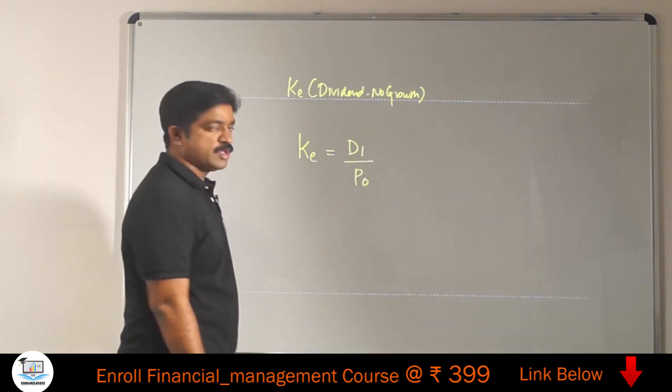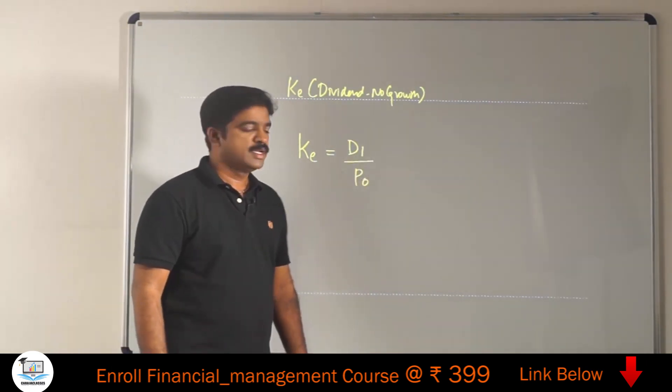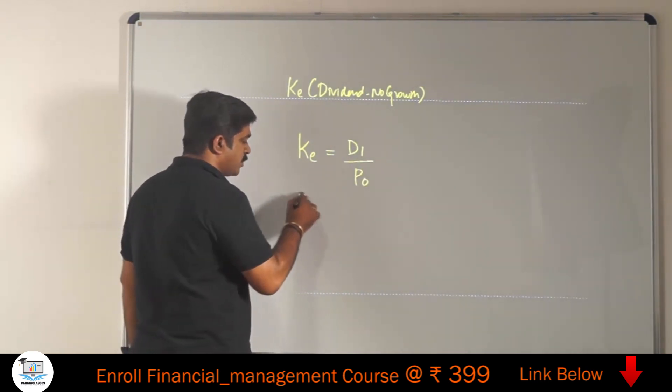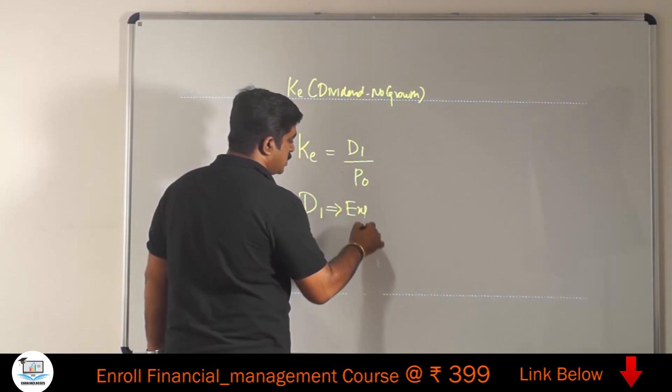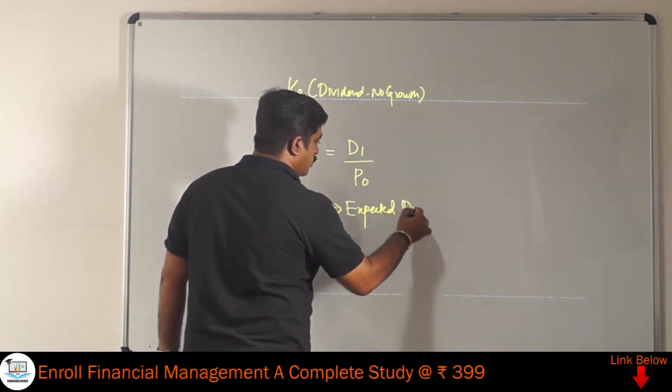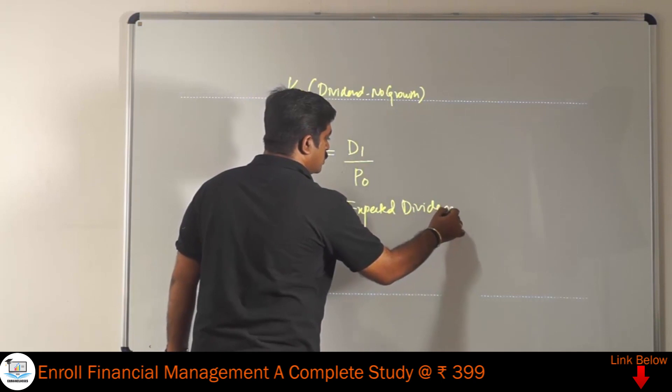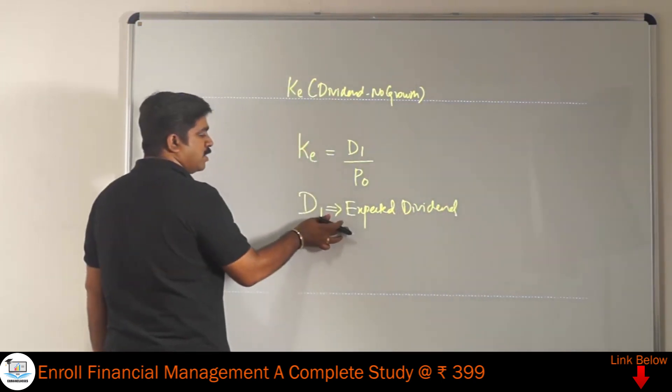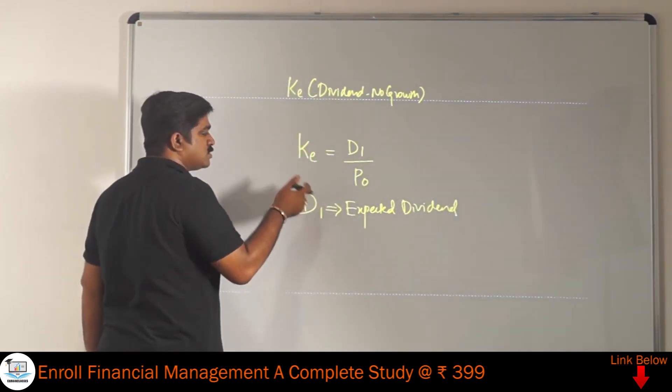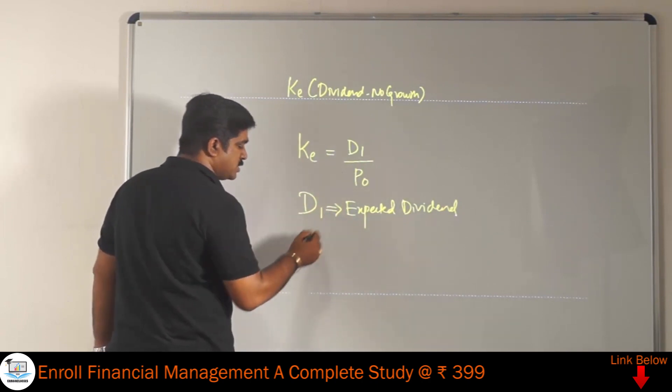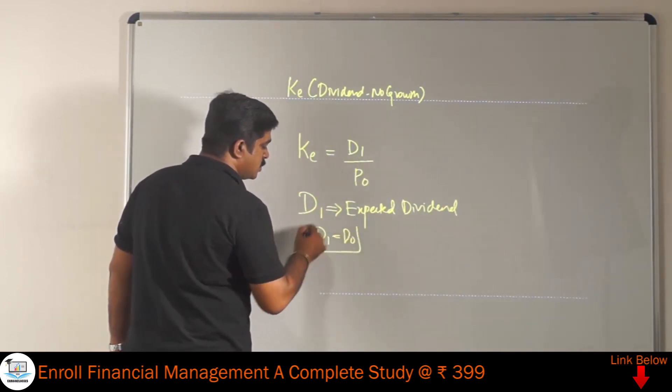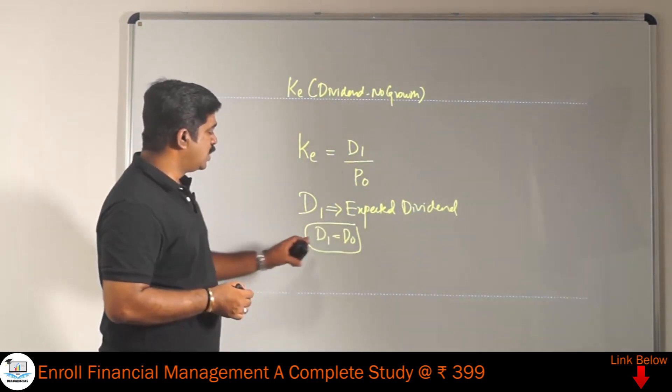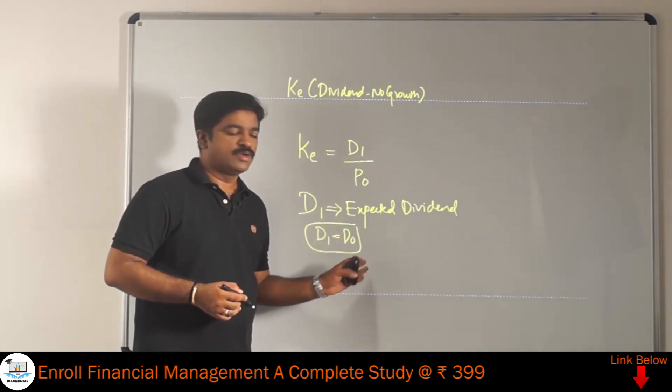What is D1? D1 is expected dividend. But as I told you, this is no growth model, so this expected dividend will be same as previous year dividend. I can say D1 will be equal to D0. In no growth model, D1 is equal to D0.